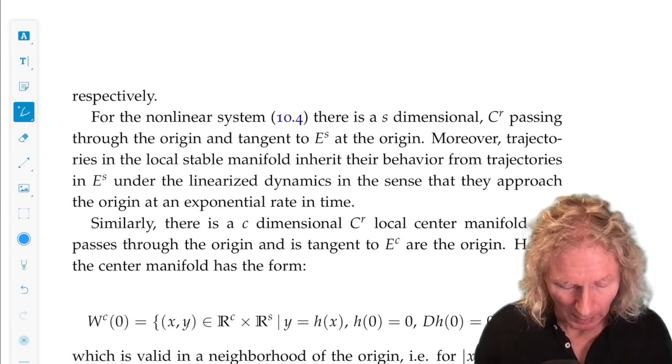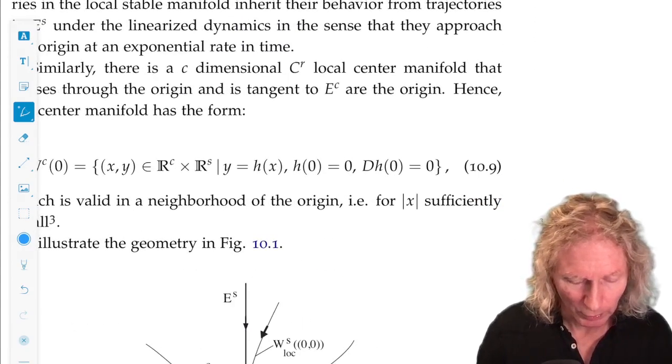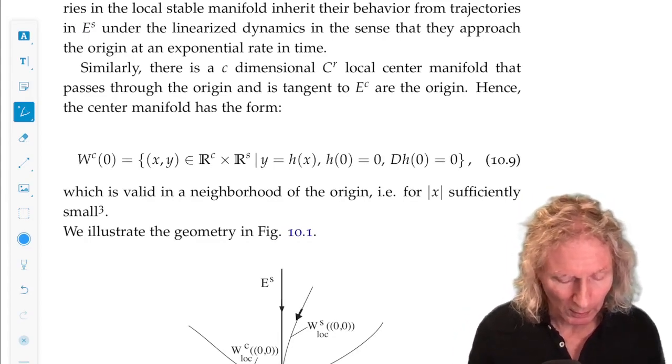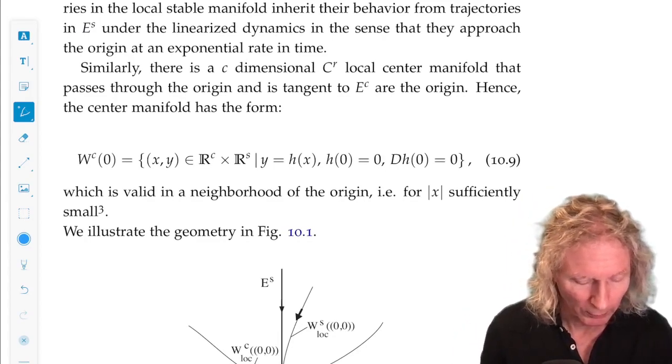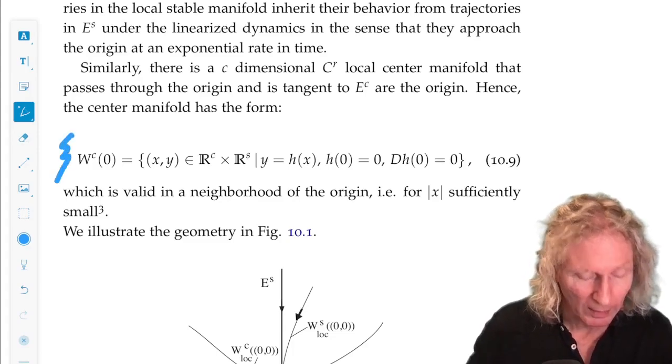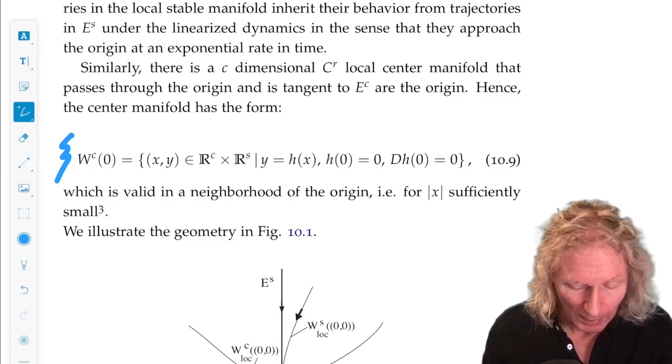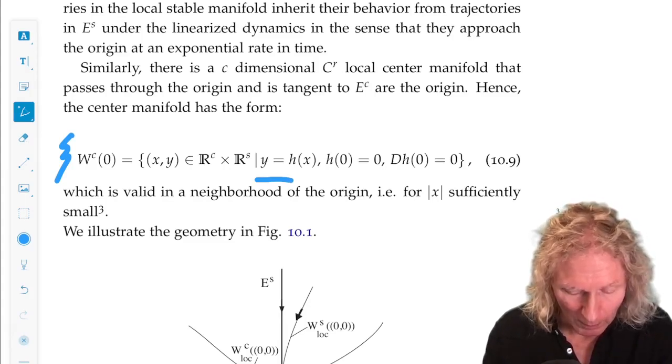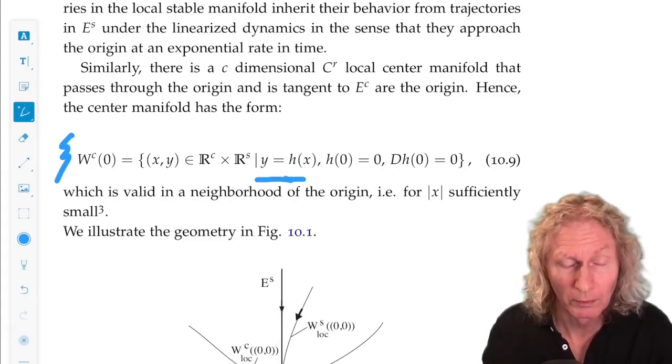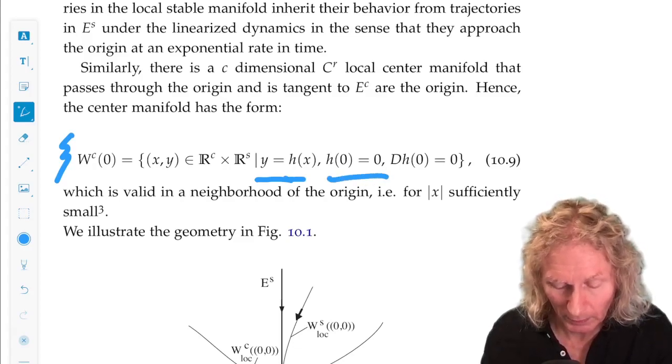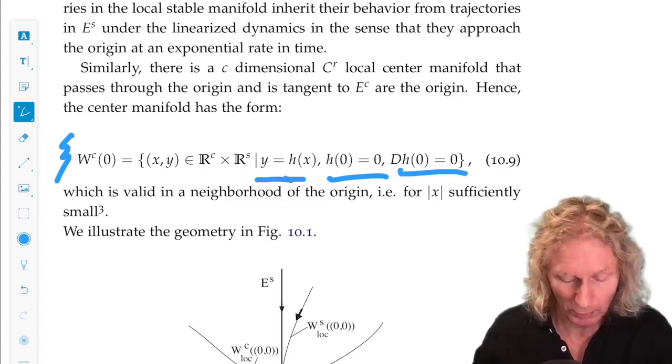So what happens to this picture when we include the nonlinear terms? Well, there is a theorem, I'll describe it below, that there exists a center-manifold that's C-R also. It's a graph over the center subspace. It passes through the origin and it's tangent to the center subspace at the origin.